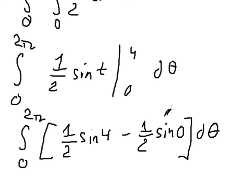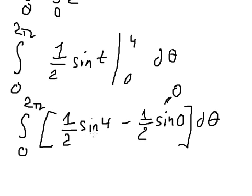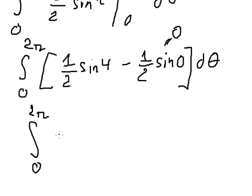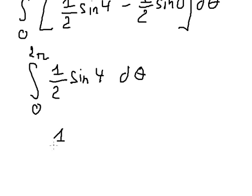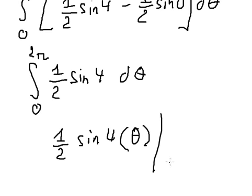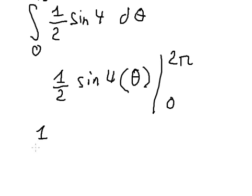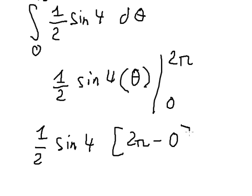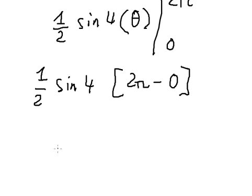Since sine of 0 equals 0, we just have one half sine 4 remaining. Integrating over d theta from 0 to 2 pi gives one half sine of 4 times theta, evaluated from 0 to 2 pi. Substituting 2 pi in and 0 in, we get the final answer: pi sine 4, which simplifies to one half times one half equals one over two pi sine 4.